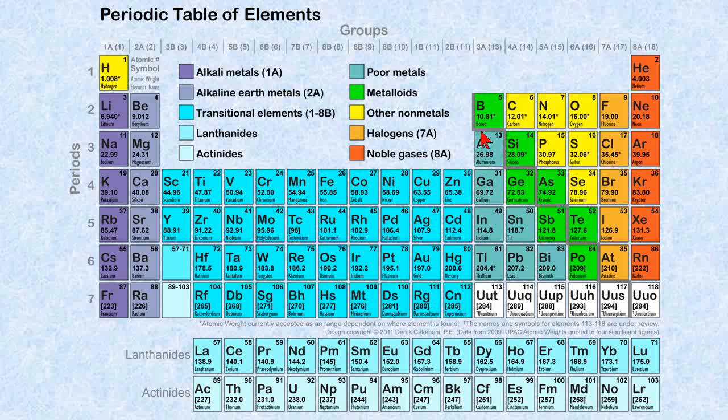Then you have your metalloids in green, which your book mentions, along with this nice line right here, which separates the metals on the left from the non-metals on the right. You have the other non-metals in yellow, halogens, and the noble gases.